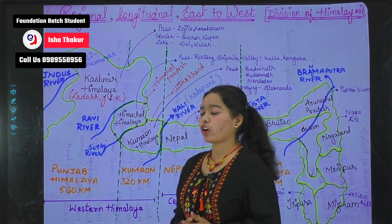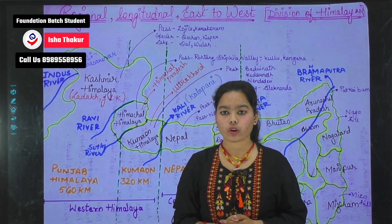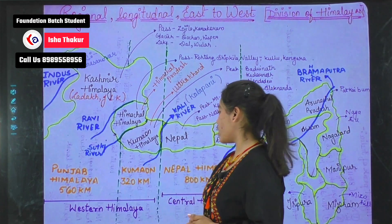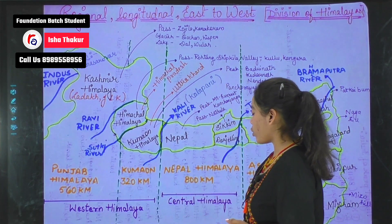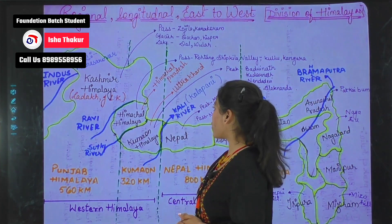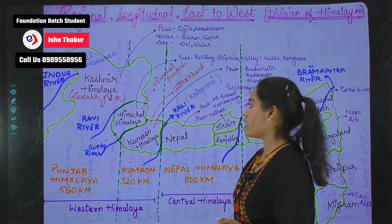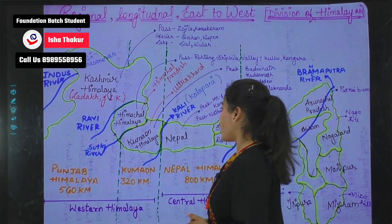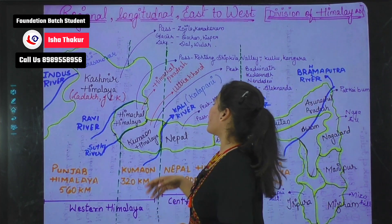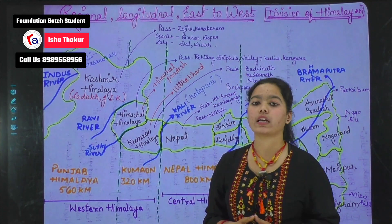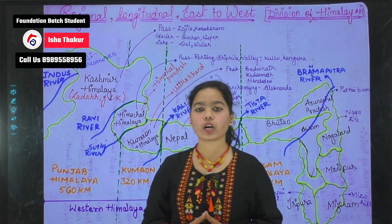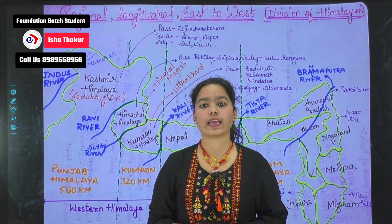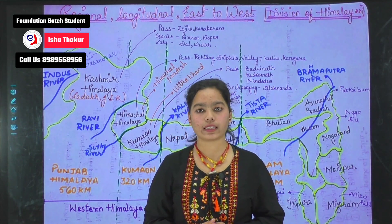Coming on to Kumayun Himalaya. The distance is 320 km, and it is situated between the Sutlej River in the west and the Kali River in the east. Kumayun Himalaya is in Uttarakhand. The peaks of Uttarakhand include Badrinath, Kedarnath, and Nanda Devi.